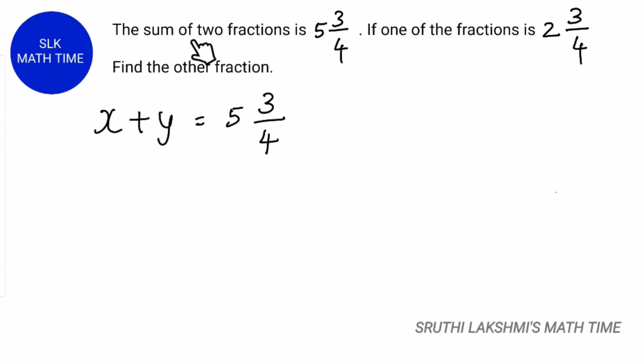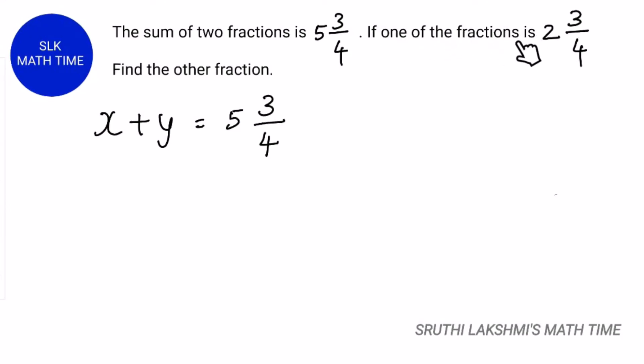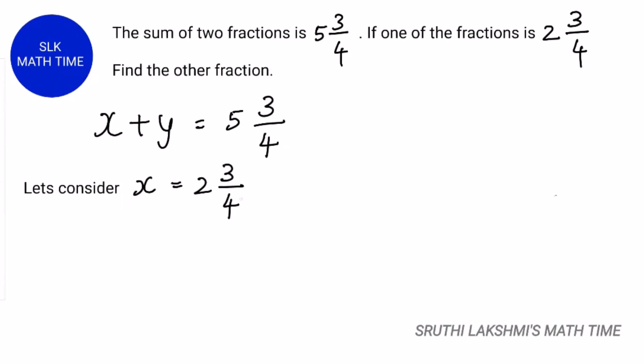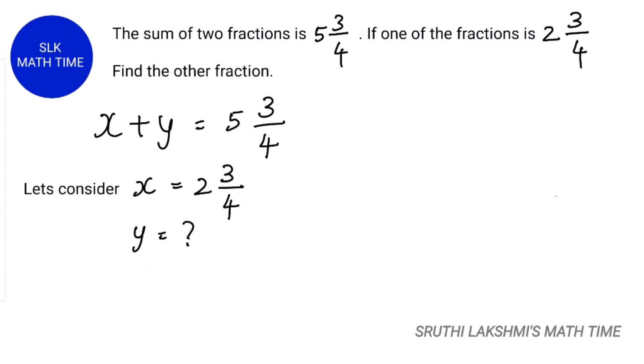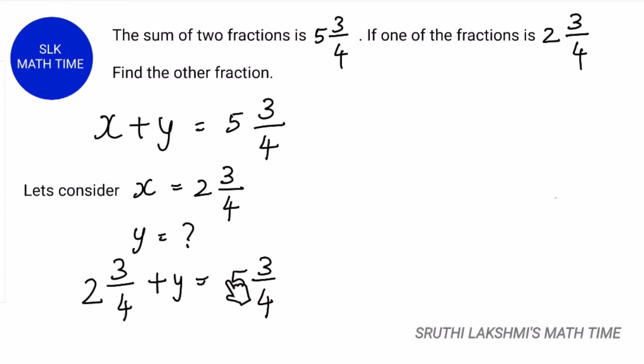So the sum of the two fractions, let's consider x and y. So x plus y equals 5 3 by 4. If one of the fractions is 2 3 by 4, let's consider x as 2 3 by 4. Now we have to find the value for y. So substitute the value for x in this expression. So it's 2 3 by 4 plus y equals 5 3 by 4.